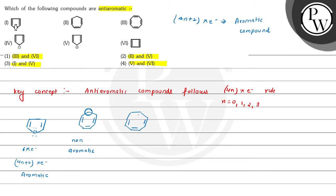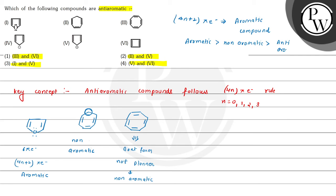The third compound has 4 double bonds and follows the 4n pi electron rule, but this compound is present in both forms and is not a planar compound, so it is a non-aromatic compound. Since the stability order is: aromatic greater than non-aromatic greater than anti-aromatic, the compound prefers to be non-aromatic rather than anti-aromatic.